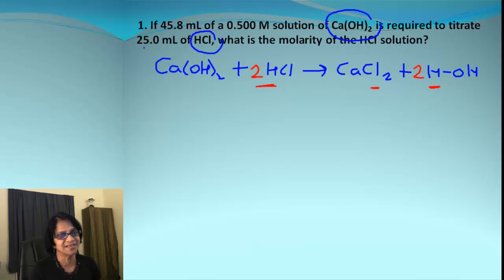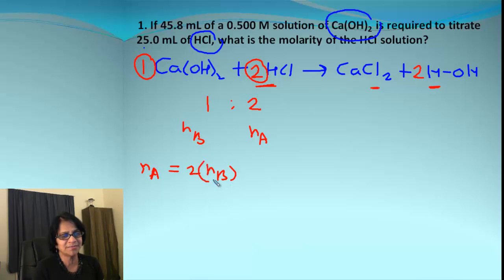The ratio of moles for base to acid in this case is one to two. The acid moles is double the moles of base. If I say this as n_B and this as n_A, then the number of acid moles is two times the moles for base. What is the formula for number of moles? Molarity formula is n divided by liters. If we rearrange, n is liters times M.